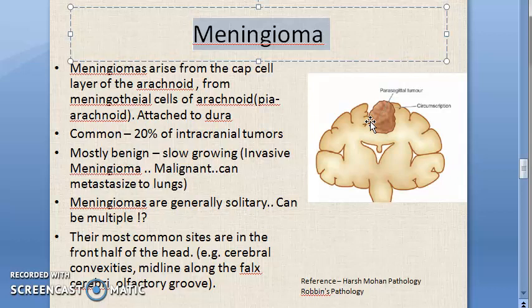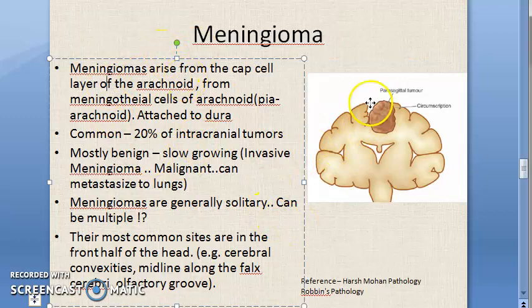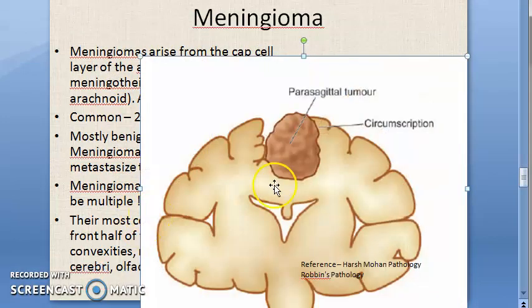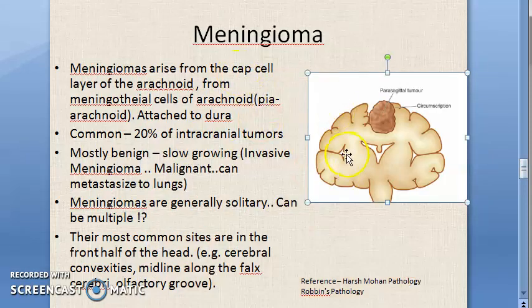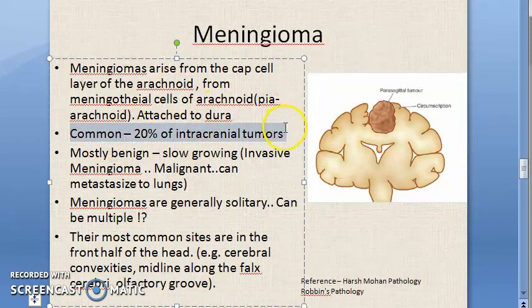Meningioma - meninges means the coverings of the brain, and from there this cancer arises, so it is called meningioma. 'Oma' means tumor, and there can be malignant meningioma, called invasive meningioma, though that is very rare. Mostly it is benign. It is very common and accounts for 20% of intracranial tumors.